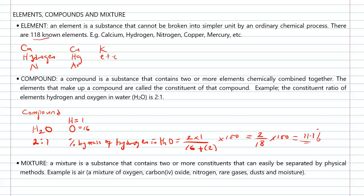The percentage by mass of oxygen can be calculated using the same method or simply by subtracting 11.1 from 100 percent. Remember, a compound has its constituents chemically combined.